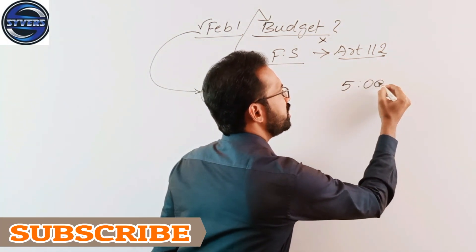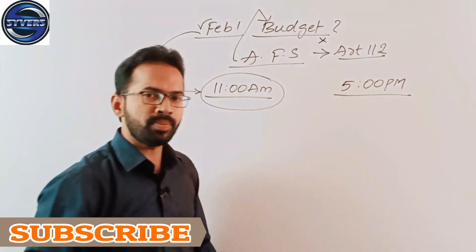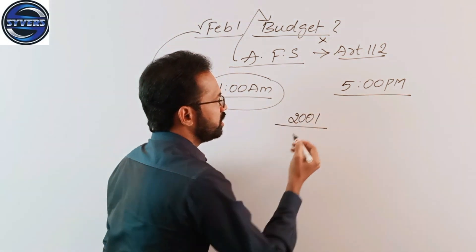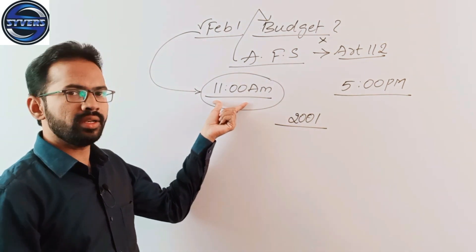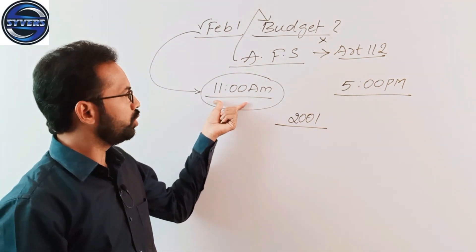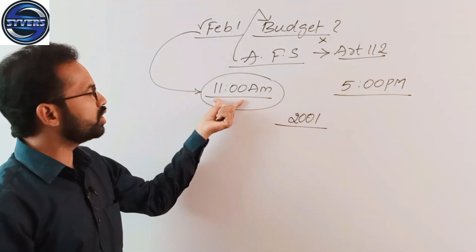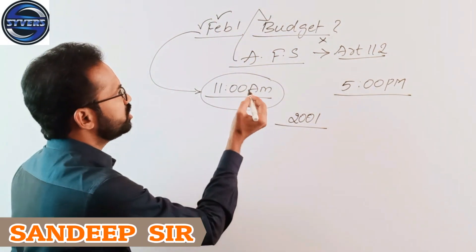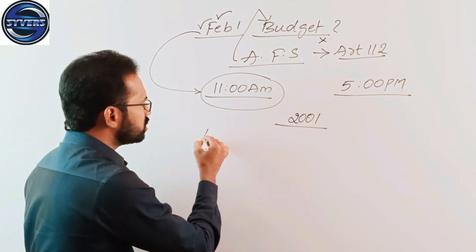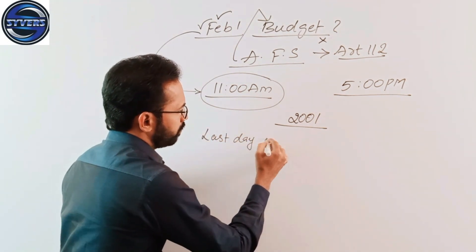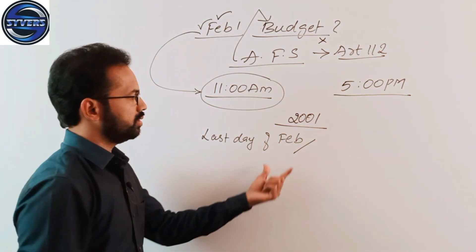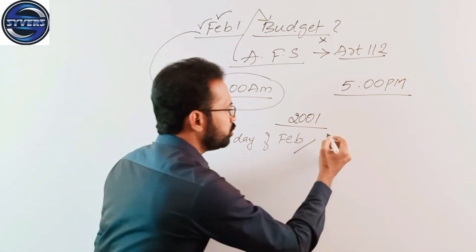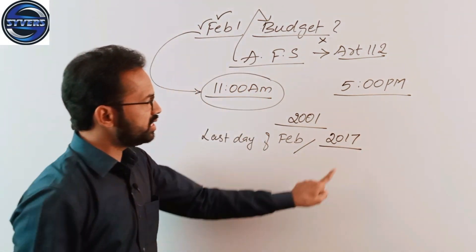Right from the beginning, they used to present at different times. Actually, budget used to be presented at 5 PM. In 2001, this was changed to 11 AM by the then finance minister Yashwant Sinha.